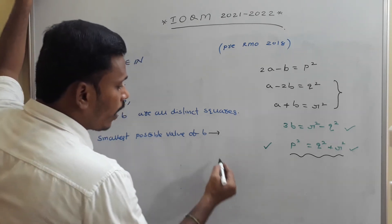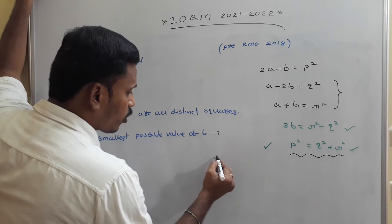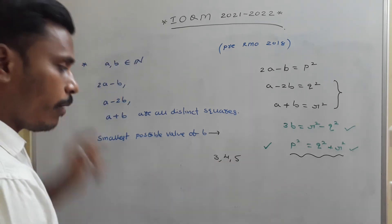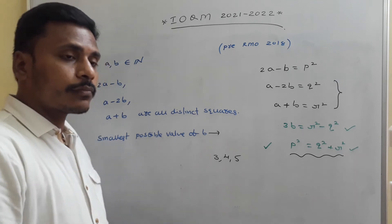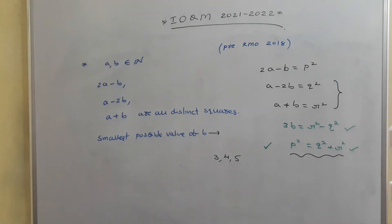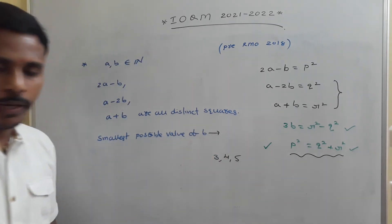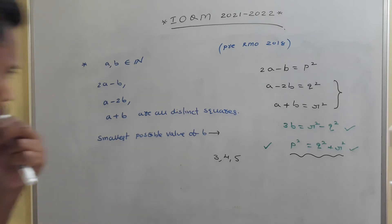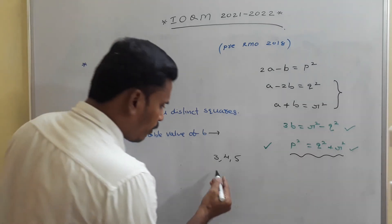We are looking for the smallest possible values, so we consider natural numbers. The triplet 3, 4, 5 is one such Pythagorean triplet, and it is the smallest Pythagorean triplet with natural numbers.